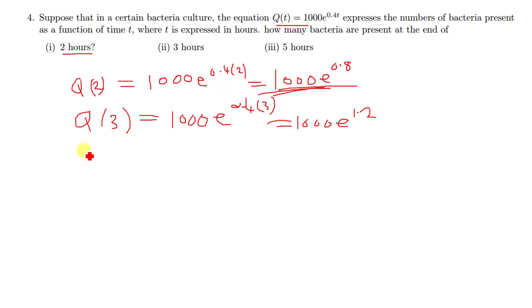It applies to the last question, which is Q of five. So Q of five is just going to be equal to 1000 e raised to the power 0.4 times 5.